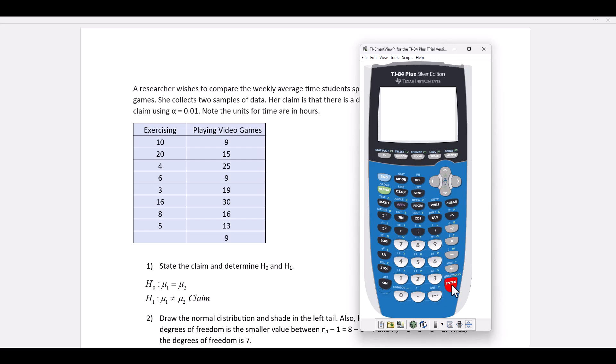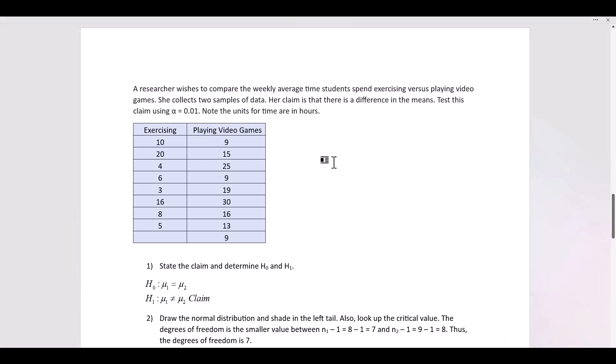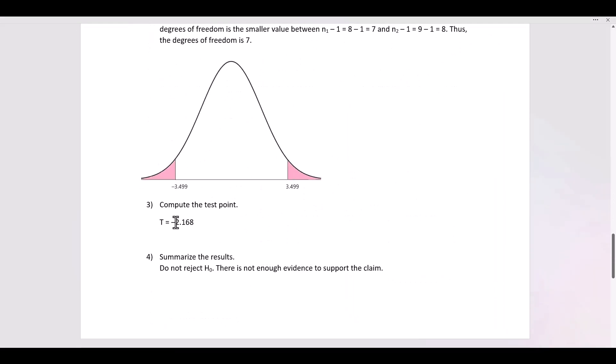and then we calculate. T is negative 2.168. And that's going to fall between the two critical values in the non-critical region. Thus, we do not reject the H0 and we summarize by saying there is not enough evidence to support the claim.